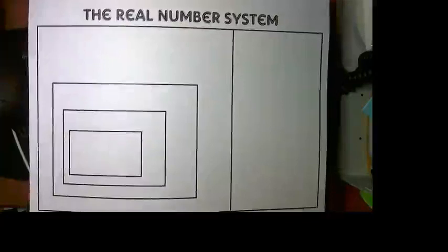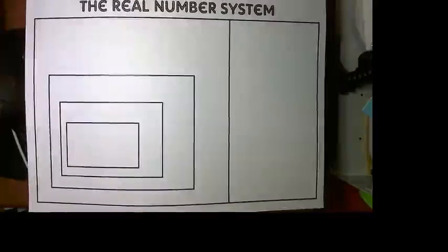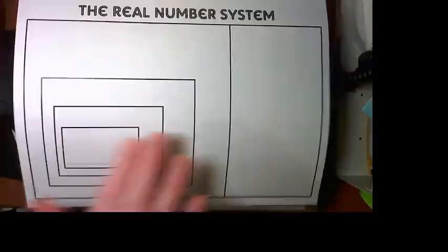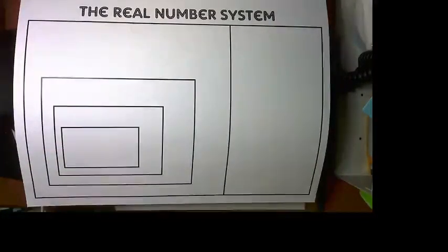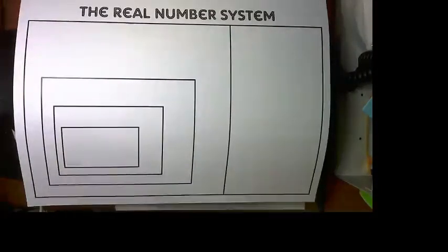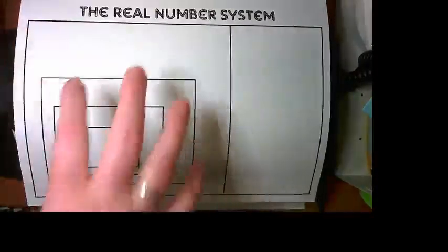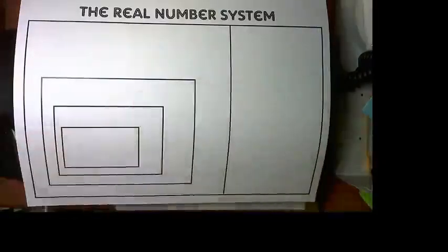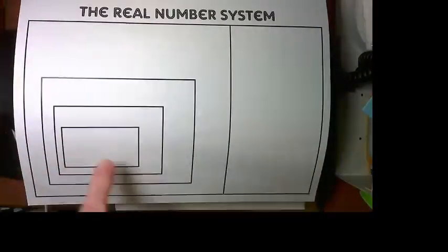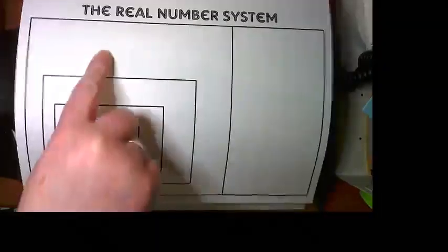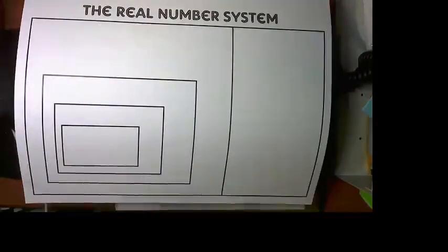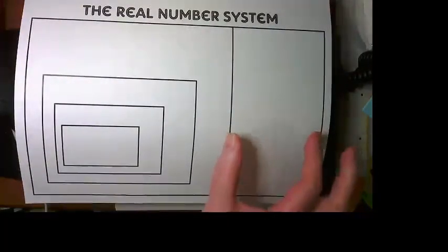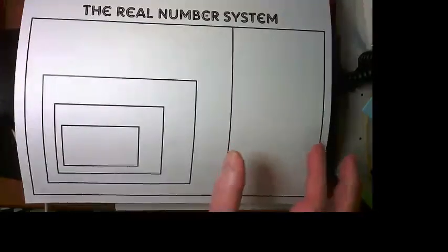So what we have here is the real number system, and included in this graphic organizer are all of the numbers that we recognize in the world. So any number that is real is in this system. If you notice, there's two sides of it. There's this side here with a set of boxes that get larger, and there's this side here with a rectangle that goes the other direction.